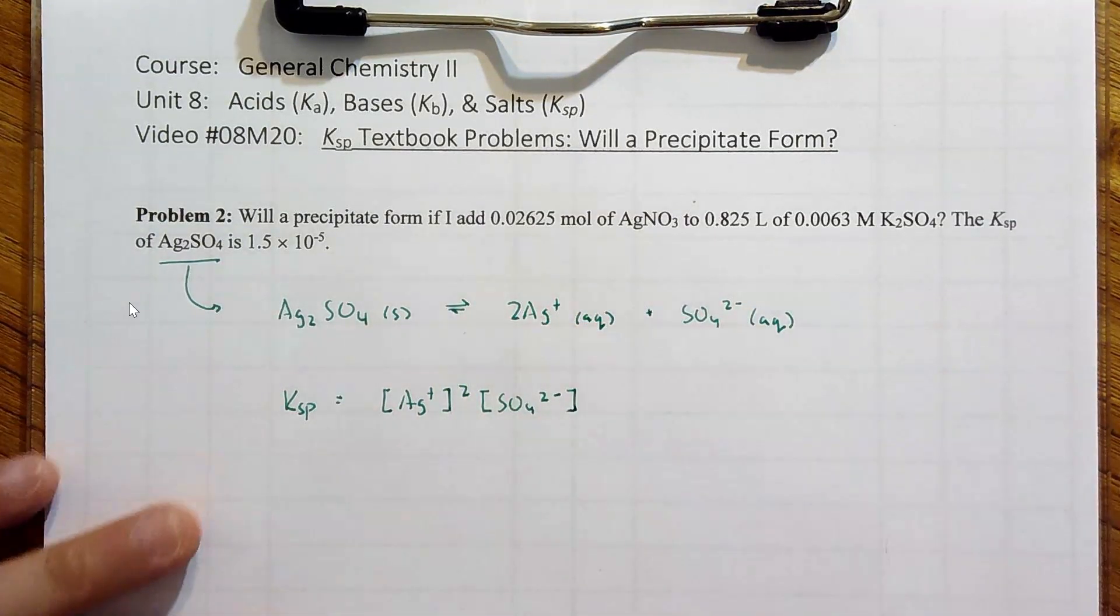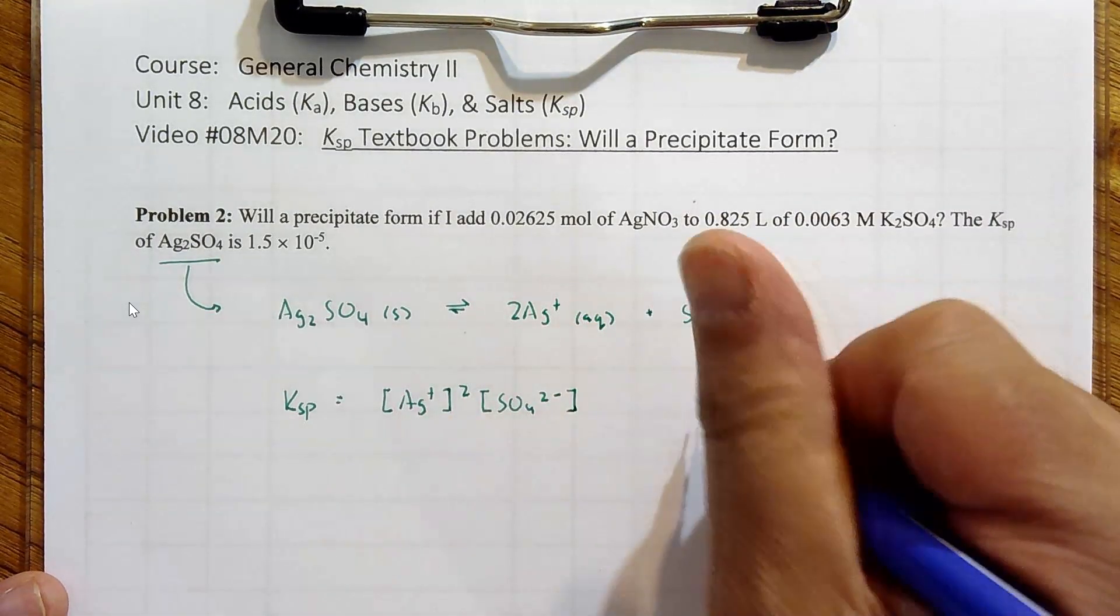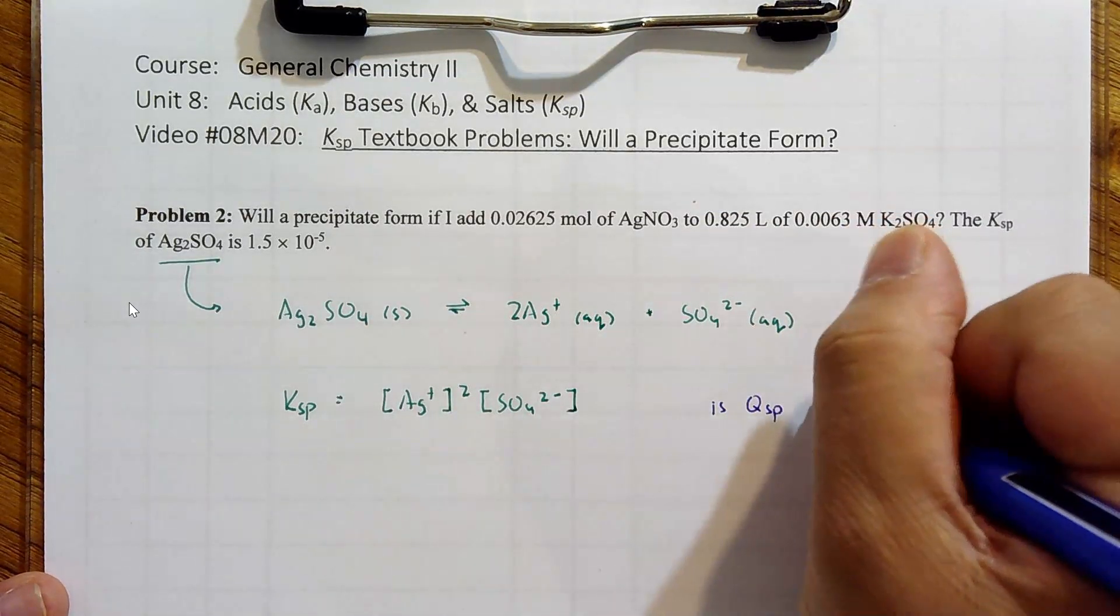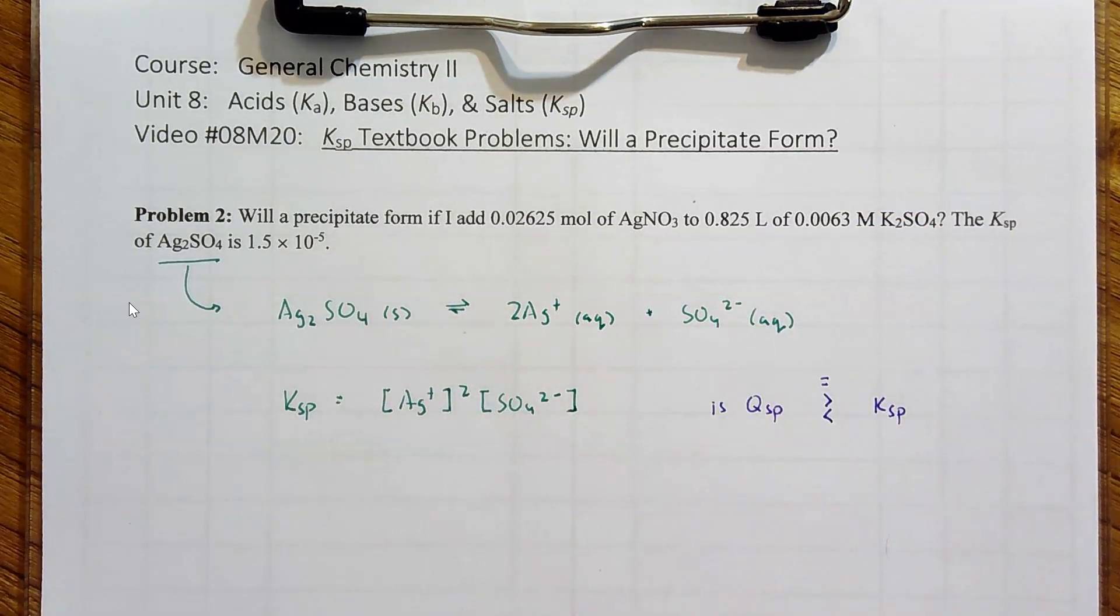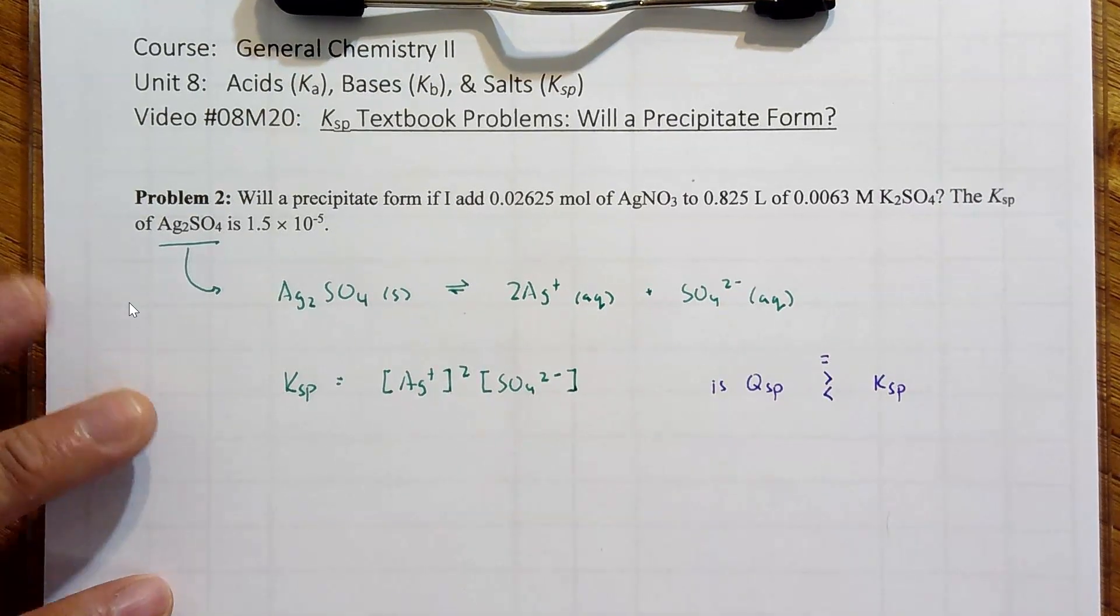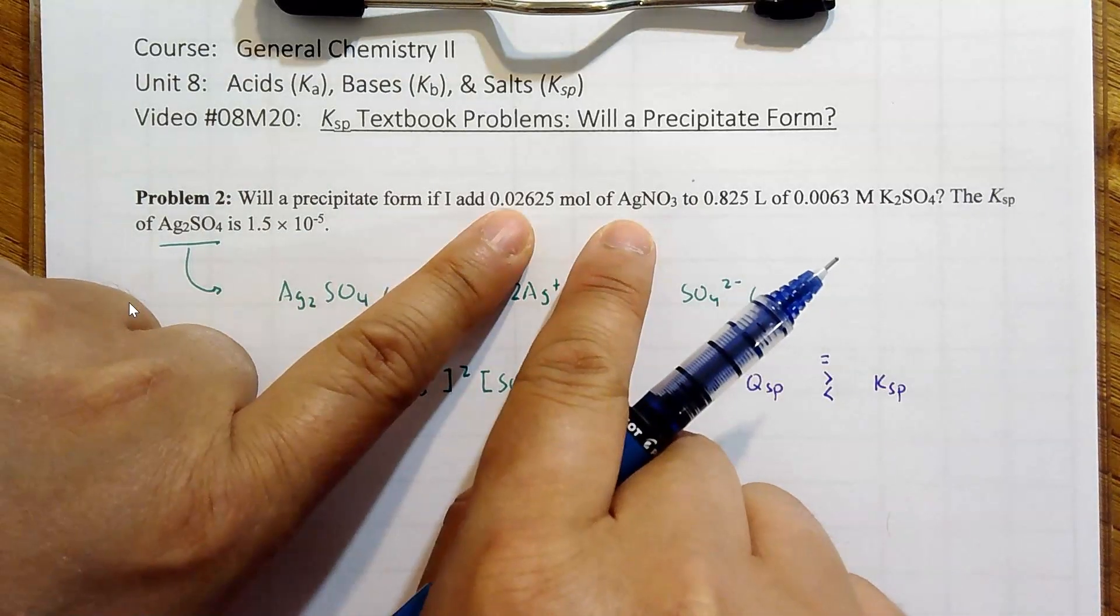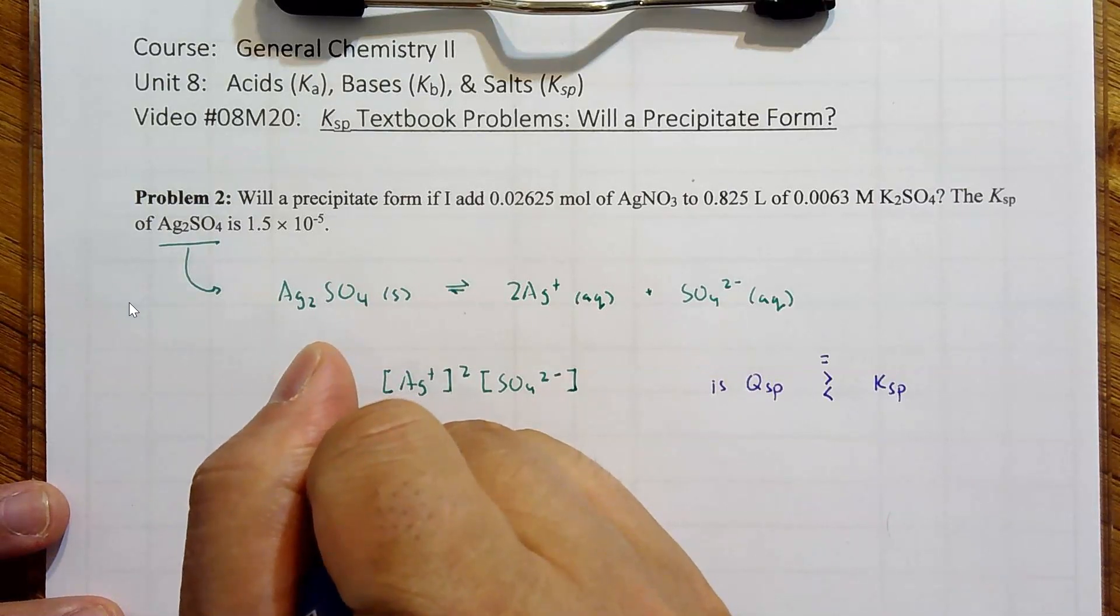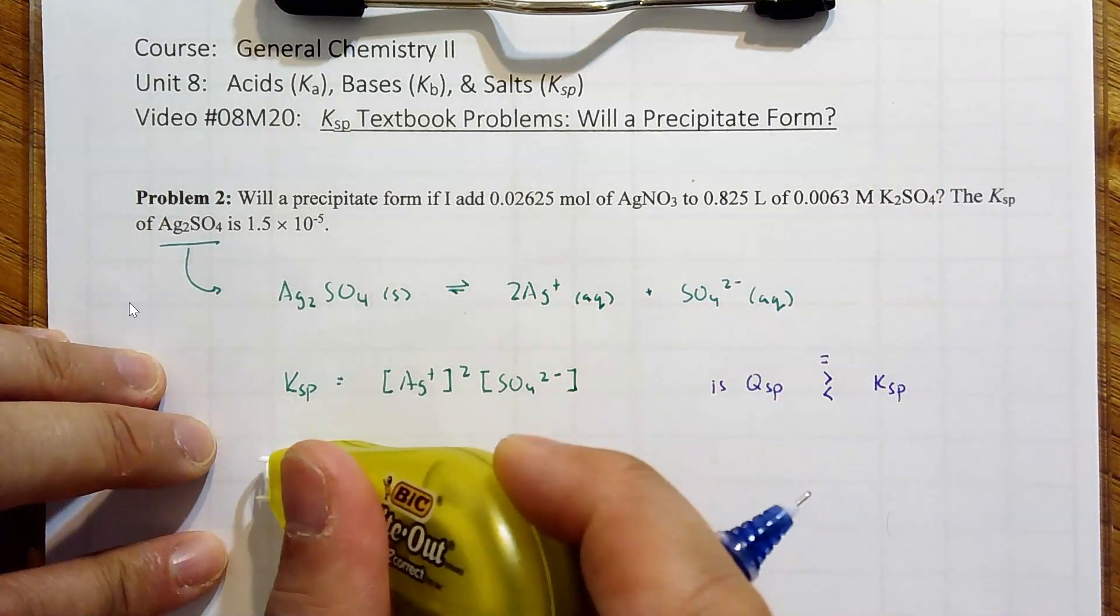So the deal is, we are going to ask ourselves, based on the concentrations or the amounts, is Qsp, the conditions that they gave us, equal to greater than or less than Ksp? And then we can figure out if the reaction shifts to the left or shifts to the right. Now here's the deal, I don't know those concentrations. Here we have AgNO3. Should I draw the chemical equation? Let me draw the chemical equation of these two reacting first.